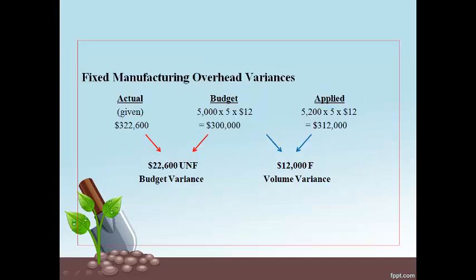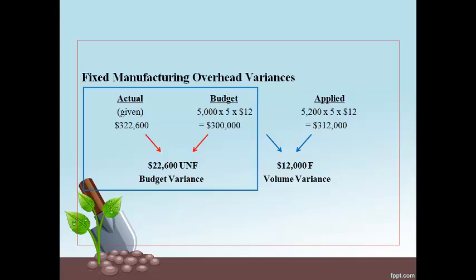Fixed manufacturing overhead is expected to remain the same regardless of how many units are made. The actual amount on the left is stated in the general ledger. The budget amount results from an estimated 5,000 units that will use 5 direct labor hours and cost $12 for each labor hour used. On the right side is the estimated cost of making 5,200 units at a total manufacturing overhead cost of $60 per unit.